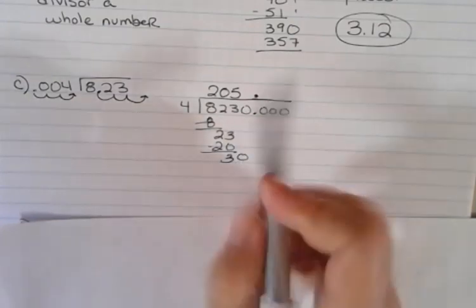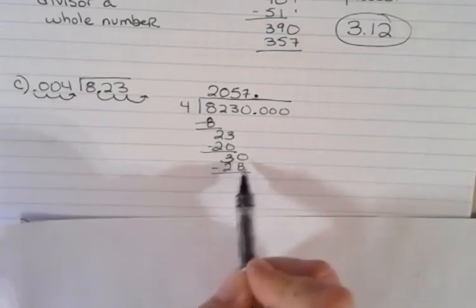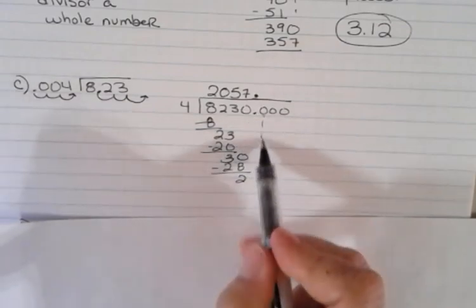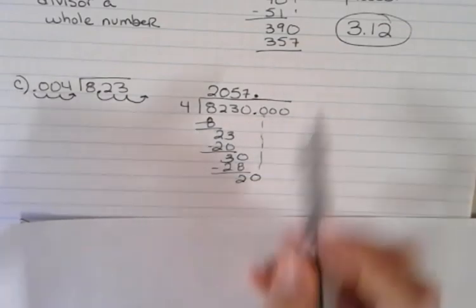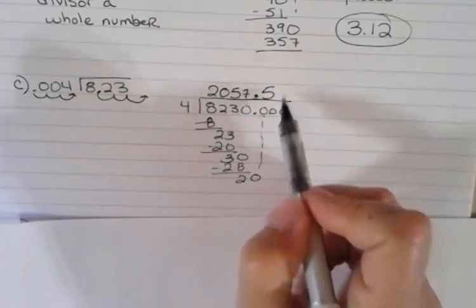Four goes into 30 seven times. That would be 28. 30 minus 28 is two. I'm going to bring down the next zero. Four goes into 20 five times. And now I don't need to worry about anything else. I know all I have left is zeros.